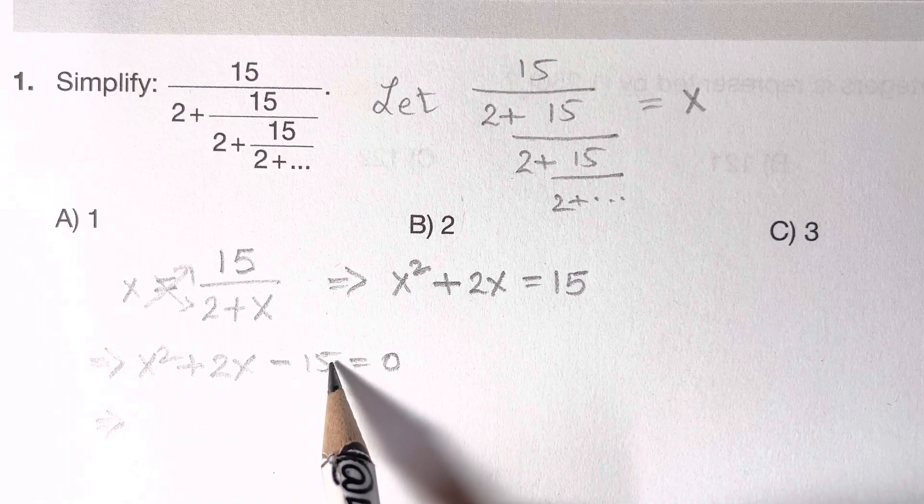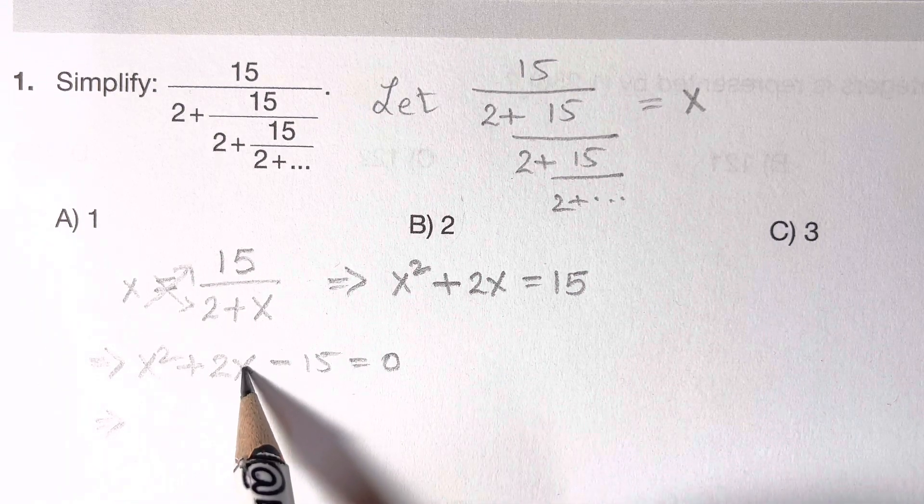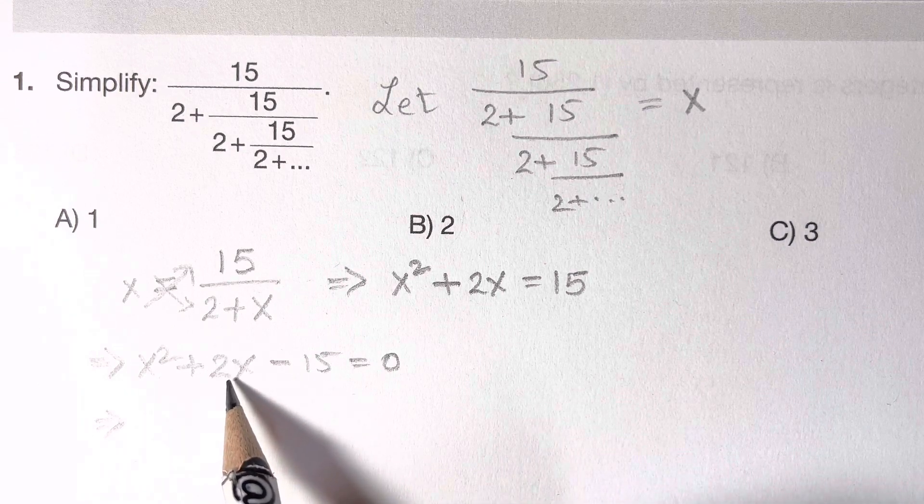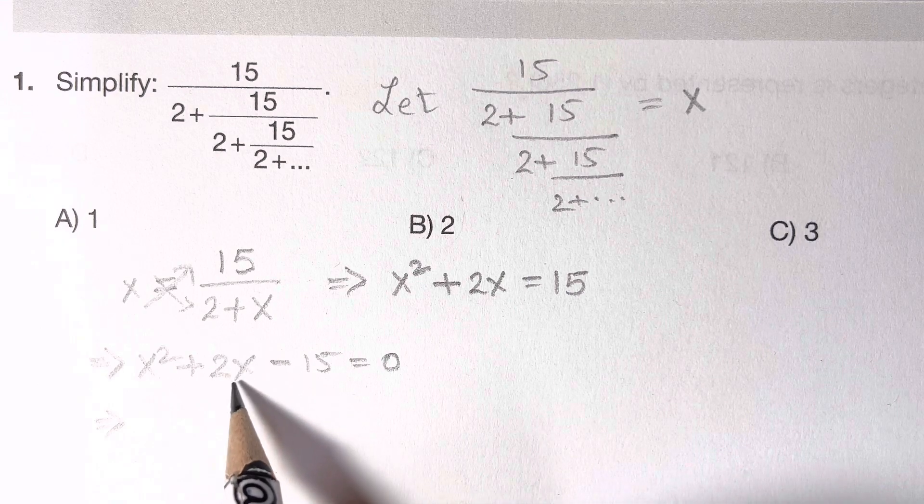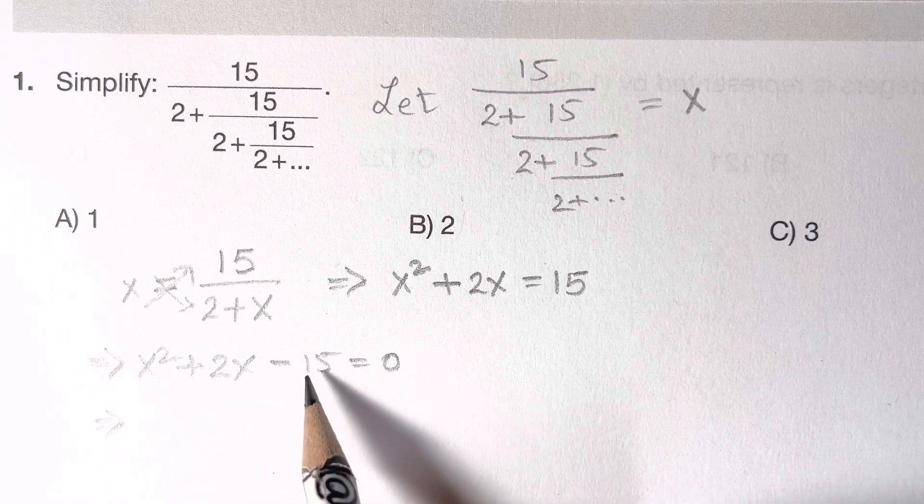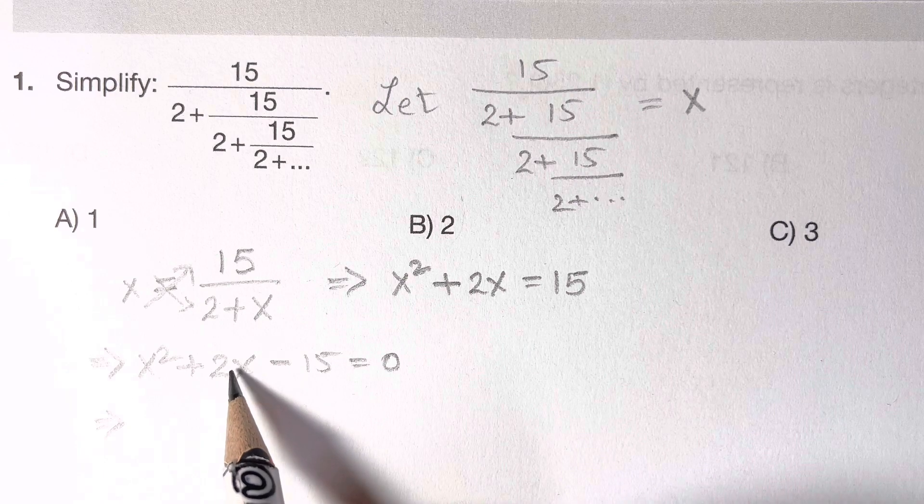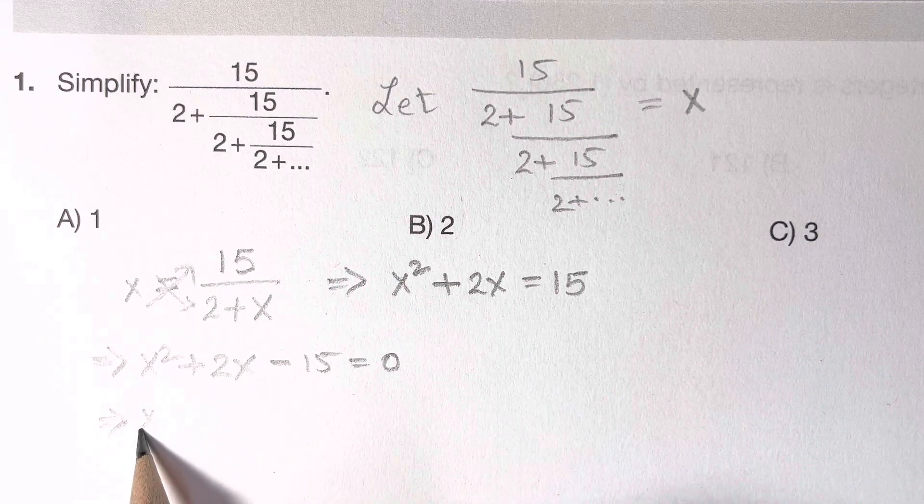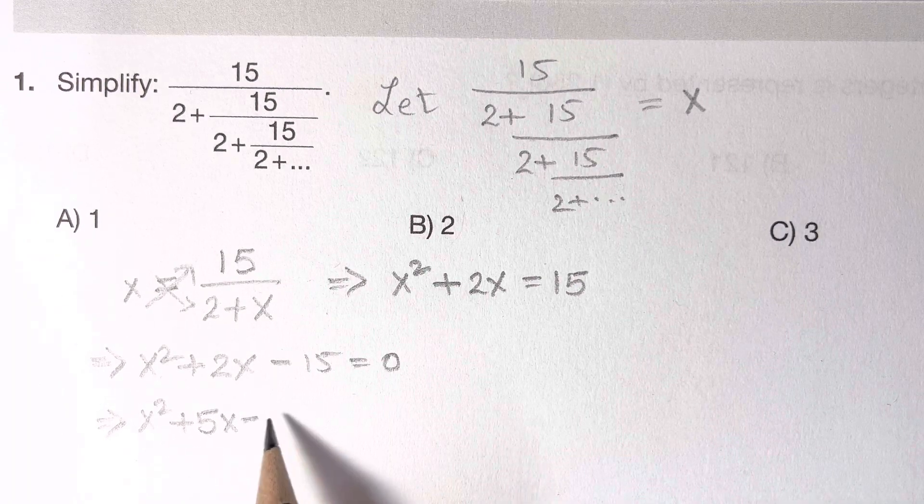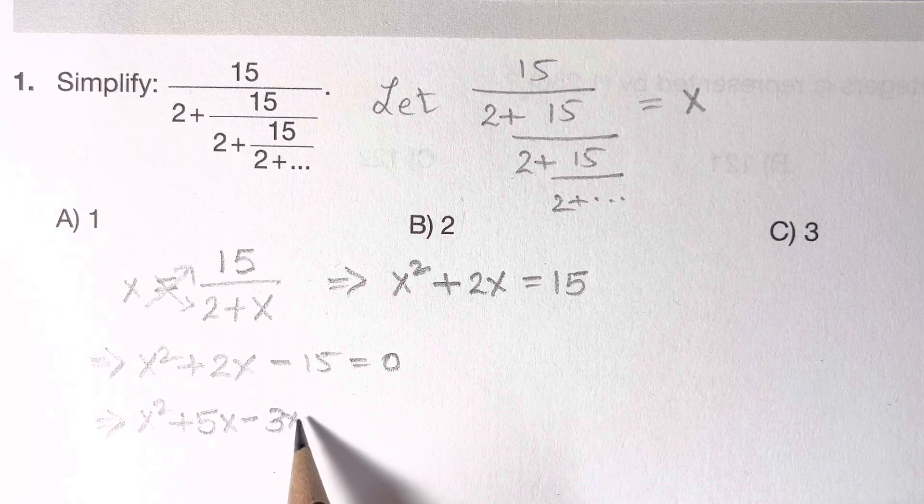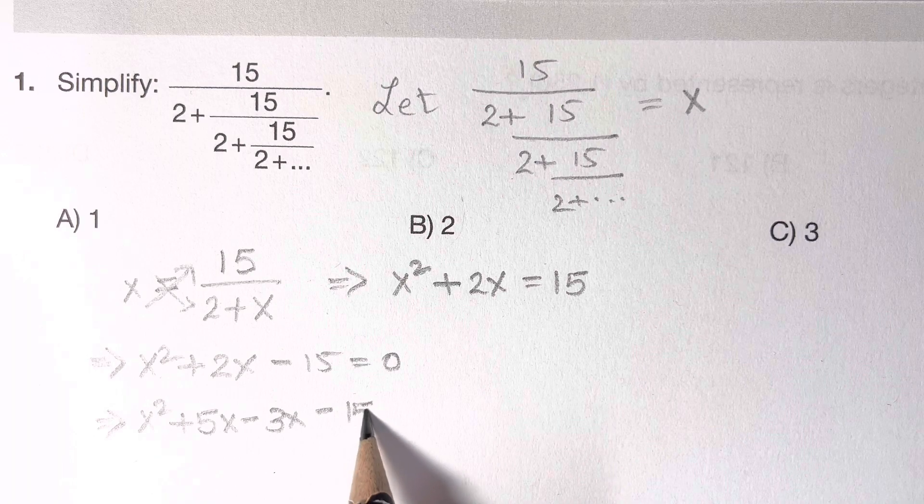How can we factorize? Your product should be negative 15 x squared and your sum should be plus 2x. So what are the factors of 15 that will give you sum as 2x? 5 and 3. 5 times 3 is 15, and 5 minus 3 is 2. So you can write it as x squared plus 5x minus 3x minus 15 is equal to 0.